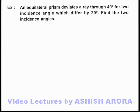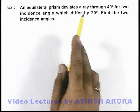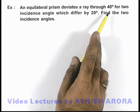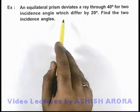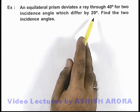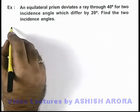In this example we are given that an equilateral prism deviates a ray through 40 degrees for two incidence angles which differ by 20 degrees, and here we are required to find the two incident angles.